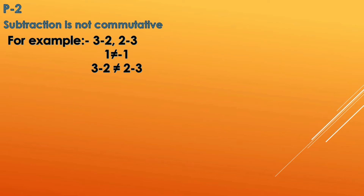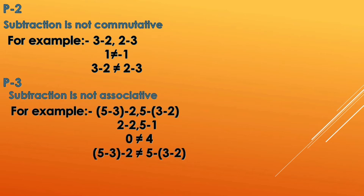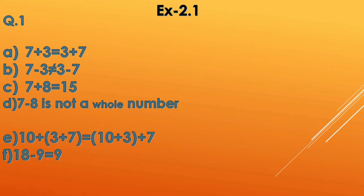Subtraction is also not associative. If you change the group, the answer is totally different. You can see that with whole numbers 5, 3, and 2 — when we first group 5 and 3, we get the answer 0. In the second way, grouping 3 and 2 gives us 4. The answers are not the same, so that is why subtraction is not associative.